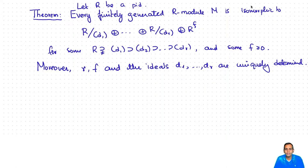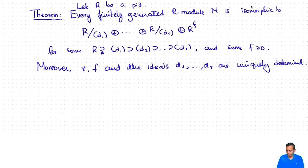What does the structure theorem for finitely generated modules over a principal ideal domain say when we take the PID to be the ring of integers? Recall that modules over the integers are just abelian groups.